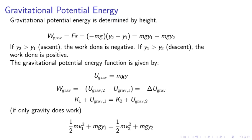Gravitational potential energy. Gravitational potential energy is determined by the height. If Y2 is greater than Y1, so we are ascending, the work done is negative. If Y1 is greater than Y2, the work done is positive. The gravitational potential energy is given by U-grav equals MgY.